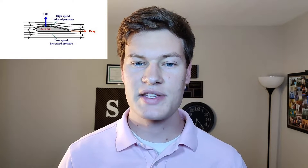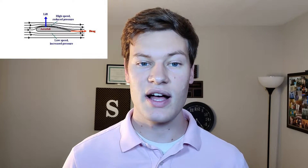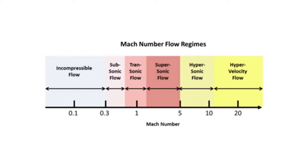But besides looking awesome, why does the swept wing even exist? Before I dive into that, if you're unfamiliar with how lift is generated, make sure you check out the video I did about Bernoulli's principle, where I explained that the airflow over the top surface of a curved wing increases in velocity. And in my video about supersonic flight I mentioned the regime known as the transonic regime — a range of speeds around the speed of sound, or Mach 1.